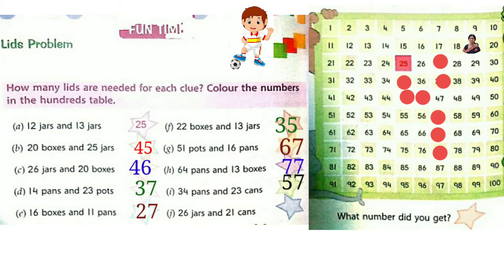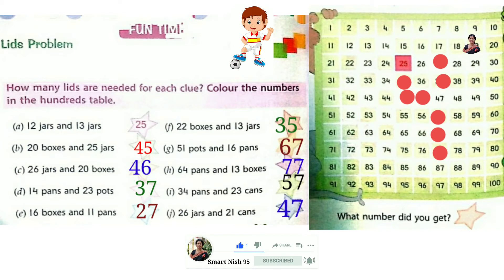Now the last question: 26 jars and 21 cans. In the 1's place: 6 and 1, 6 plus 1 is 7. And in the 10's place: 2 and 2, 2 plus 2 is 4. The answer is 47. Colour 47 in the 100's table.